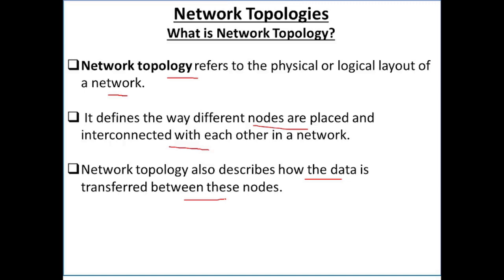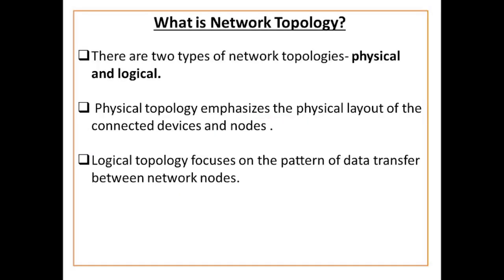Kaisi data ka transmission hoga within a network. Now, there are two types of network topologies — physical and logical. Physical topology emphasizes the physical layout of the connected devices and nodes, uska architecture kya hai, devices ko kaise ek dusre se connect kya jayega. Logical topology focuses on the pattern of data transfer between the network nodes — kaisi data ko transfer kya jayega ek node se dusre node tak.